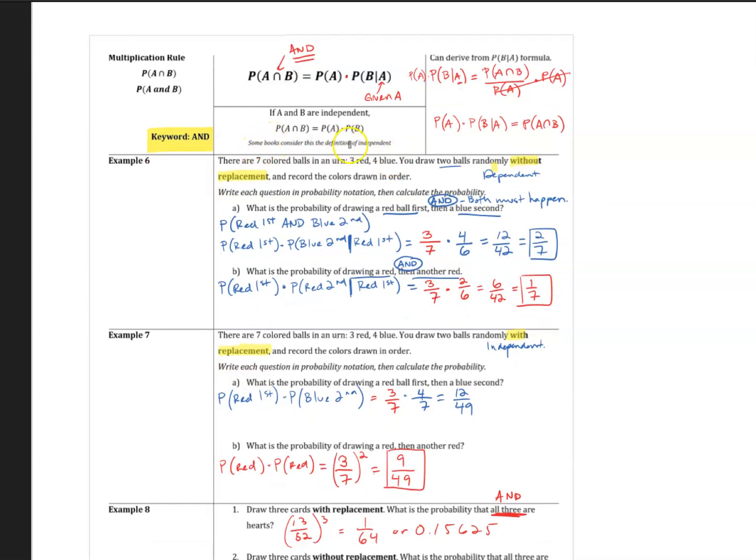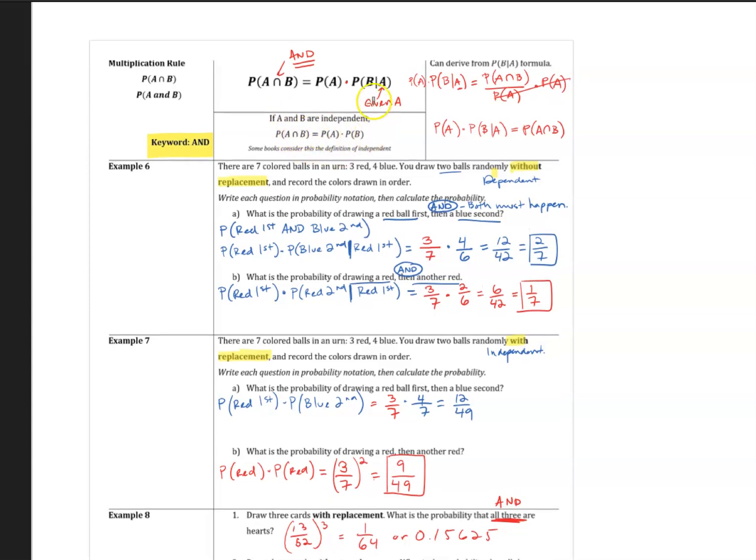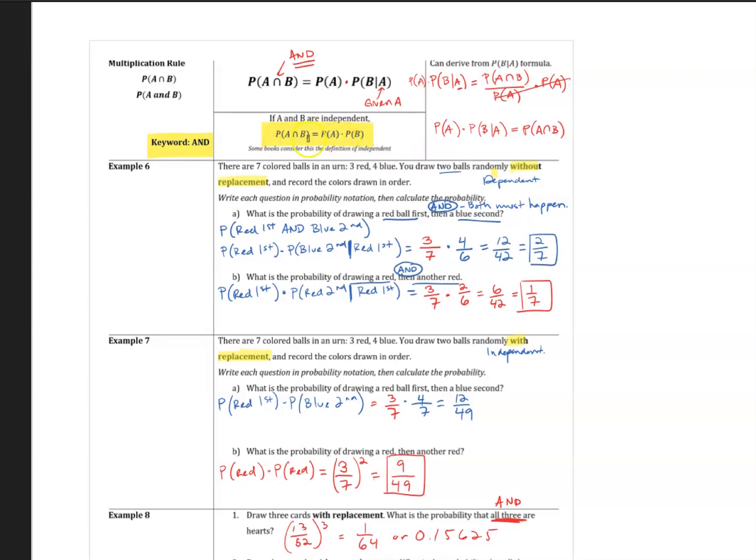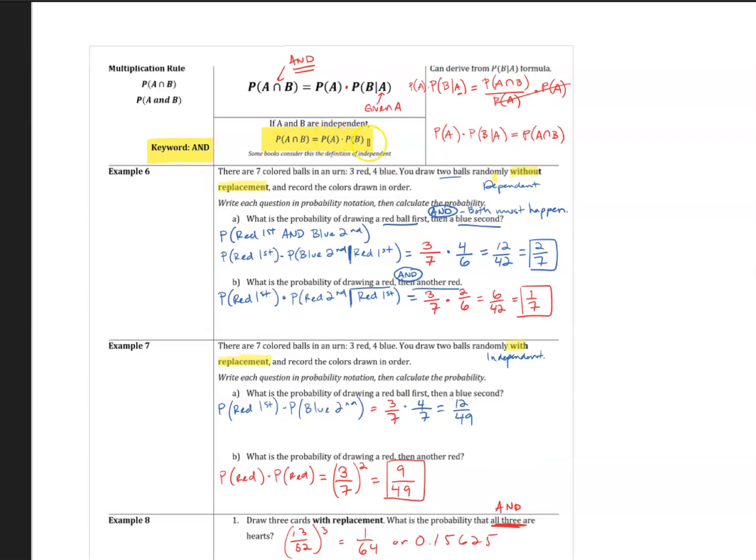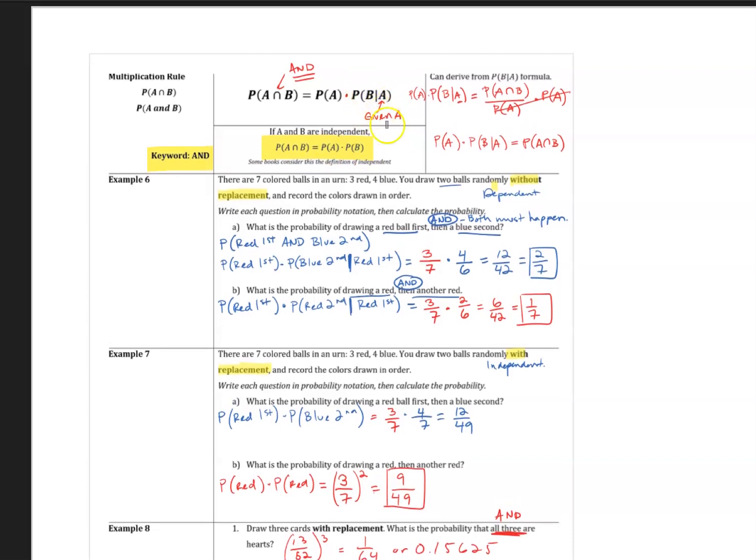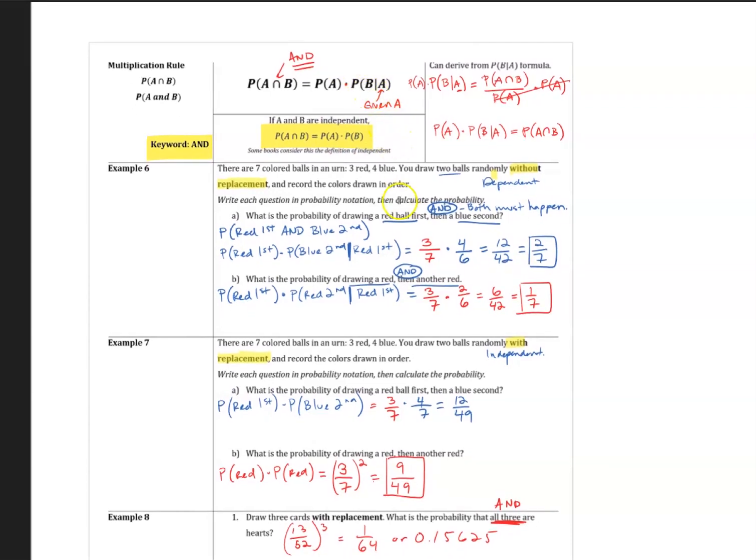Something we need to know is this definition of independent. Two events are independent, where one doesn't influence the other one. If we have two events that are independent, then we have this multiplication rule right here. We can just say probability of A times the probability of B because, since they're independent, we have that.